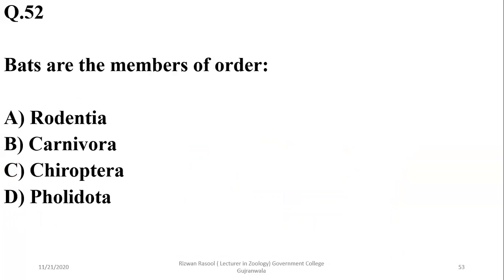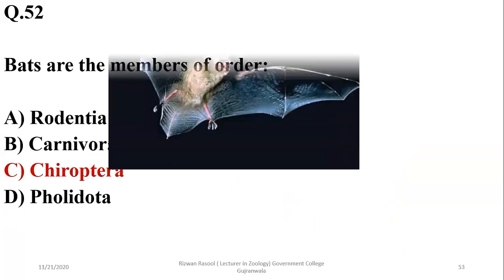Bats are the members of which order? In Rodentia, rodents are included; in Carnivora, carnivorous animals are included. Bats are the members of the Chiroptera order, while pangolins are in a following order. So the right option is C.